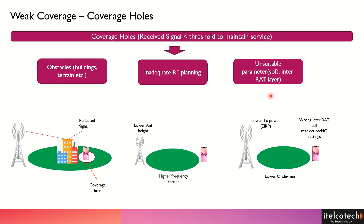A third scenario is incorrect parameter settings. Even if the infrastructure is well designed — good number of masts, good antenna height — if the right parameters are not set, coverage holes can appear. For example, not providing sufficient transmit power from the base station, or radio modules not transmitting beyond a certain range such as 43 dBm, or poor parameter settings for interlayer movement — all of these can also cause coverage holes.